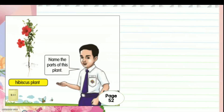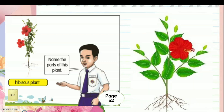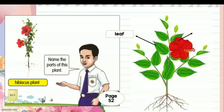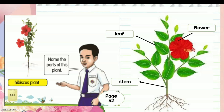Now let's name the parts of this plant — namakan bahagian pada tumbuhan ini. This is a hibiscus plant, ini pokok bunga raya. This is the leaf (daun), this is the flower (bunga), this is the stem (batang), and this is the root (akar).